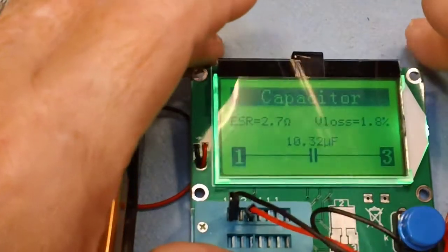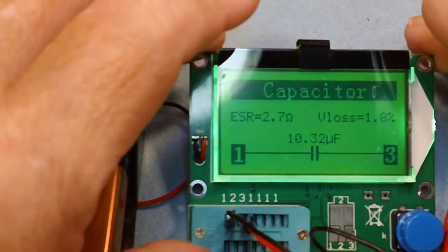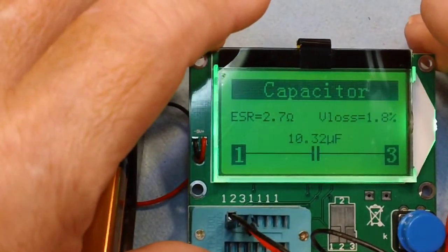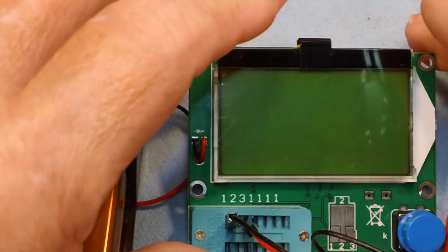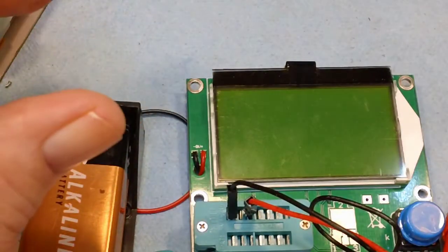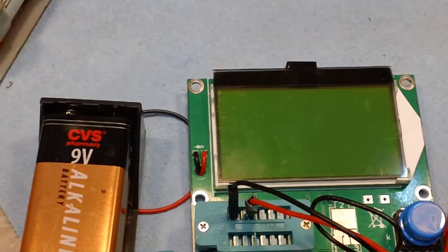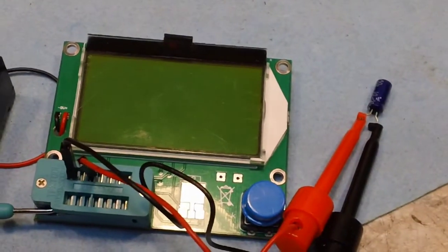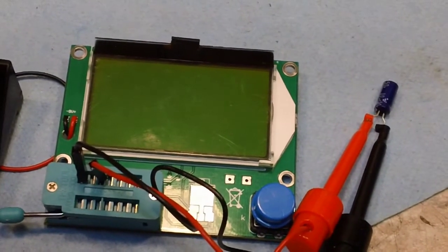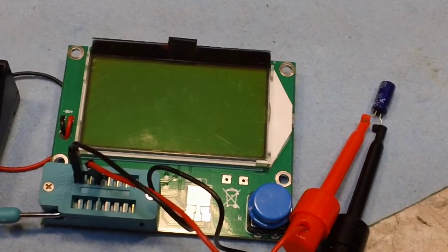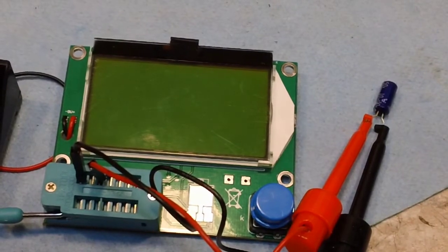Alright, there you got what I think is going to be a replacement. ESR 2.7, 10.3 on the microfarad. That's pretty close. It's a 50 volt cap. So, you can see the size difference. It's even smaller than the one that was in there. So, I think that's the one we're going to go with. And I'll bring you back for it in just a bit.